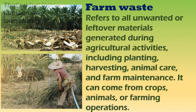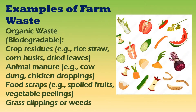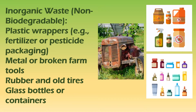Farm waste refers to all unwanted or leftover materials generated during agricultural activities, including planting, harvesting, animal care, and farm maintenance. It can come from crops, animals, or farming operations. Here are some examples of organic waste that can be found on a farm. Inorganic waste, or non-biodegradable materials, found on a farm include items like plastic, metal, and glass.